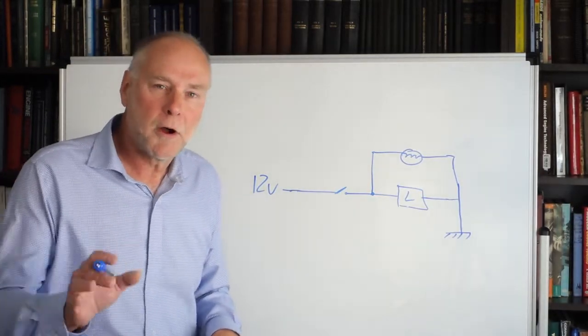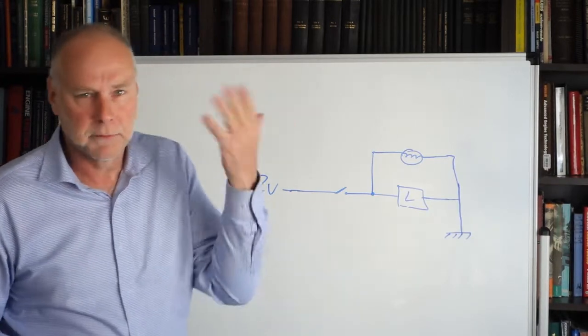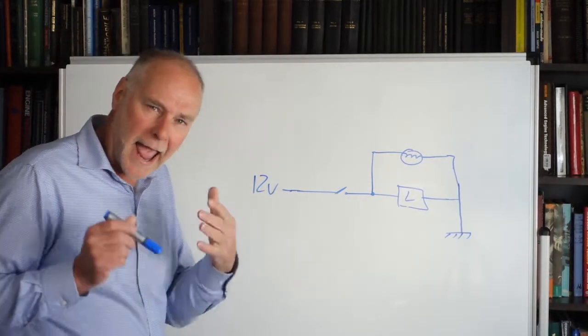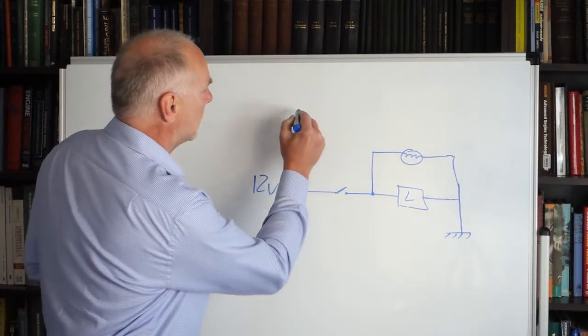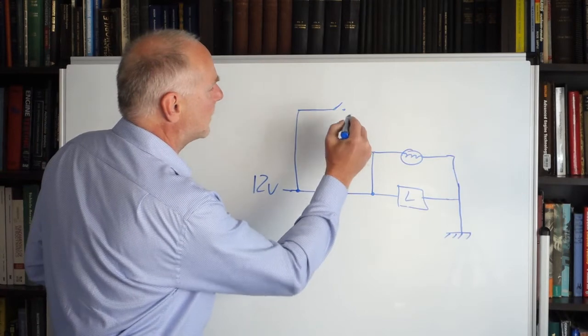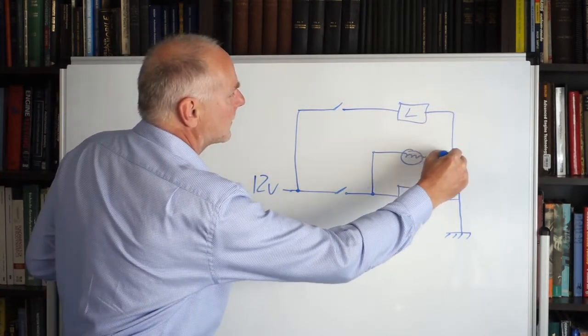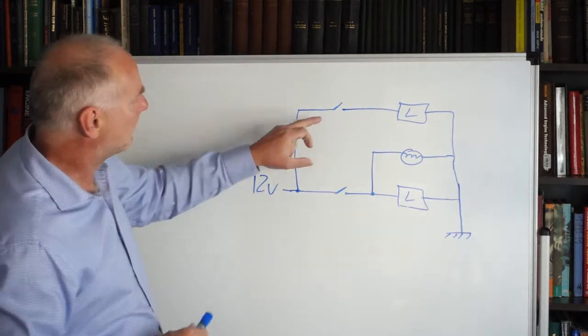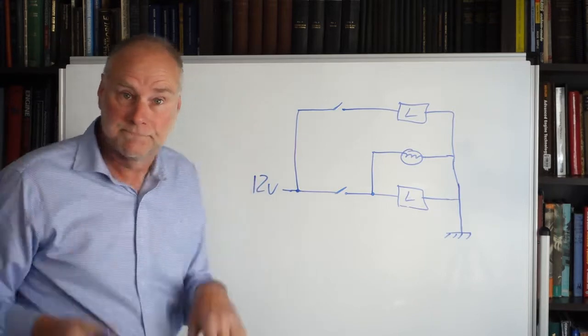Now, we decide we want to add another load that we can switch, a different sort of load, a pump or fan or whatever. So let's add that other load with its own switch. We pick up from 12 volts, we've got the switch for the new load, we've got the new load, we can go back to ground that way. When we close the switch there, that load works. When we close the switch there, that load works. Easy!